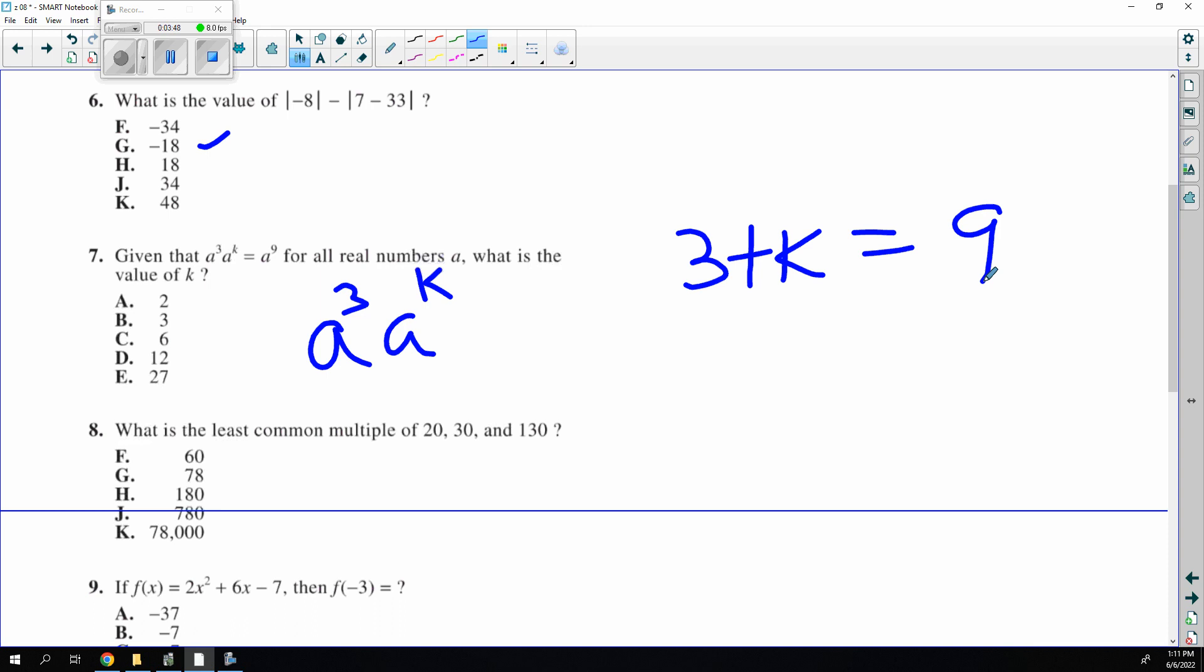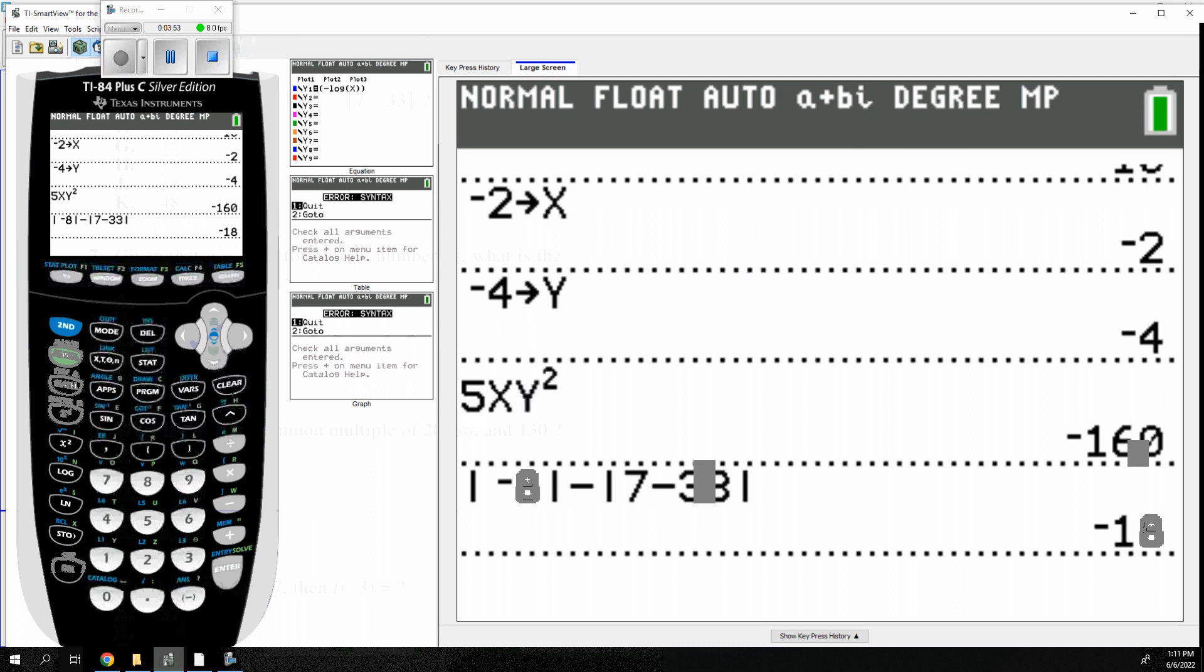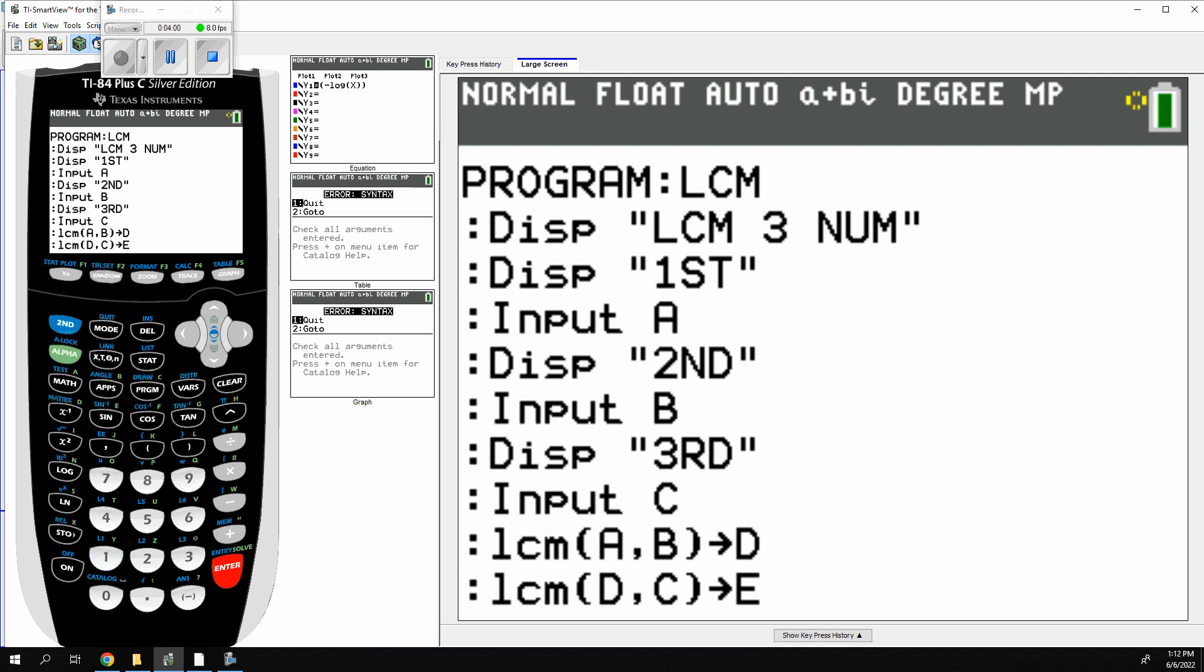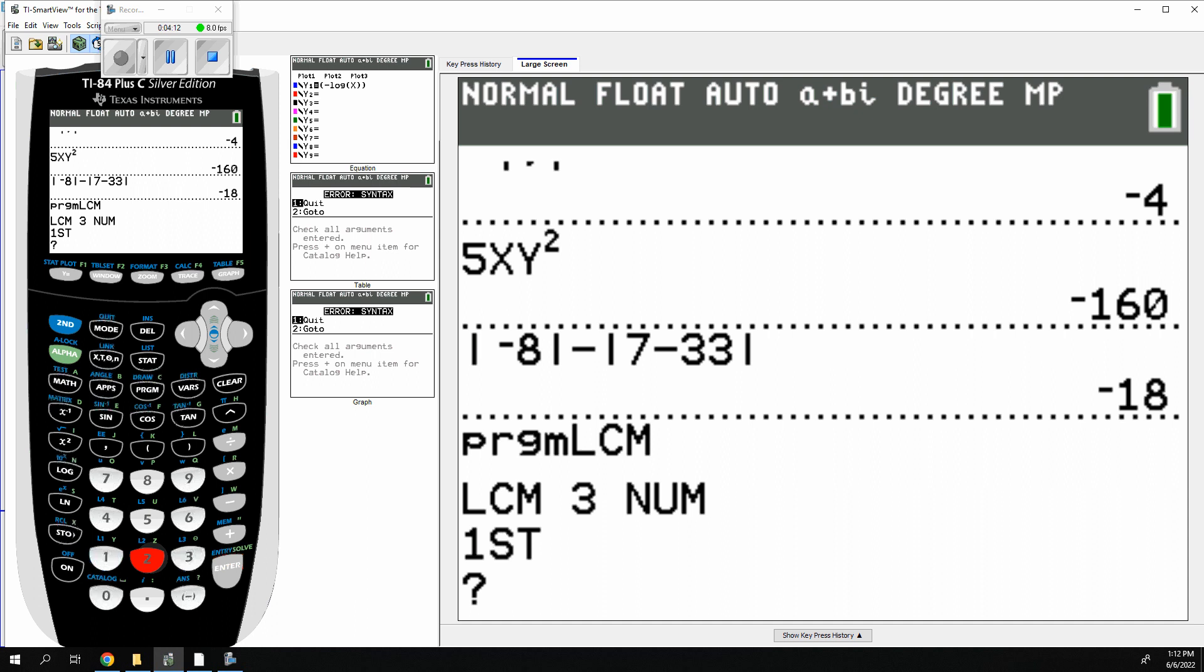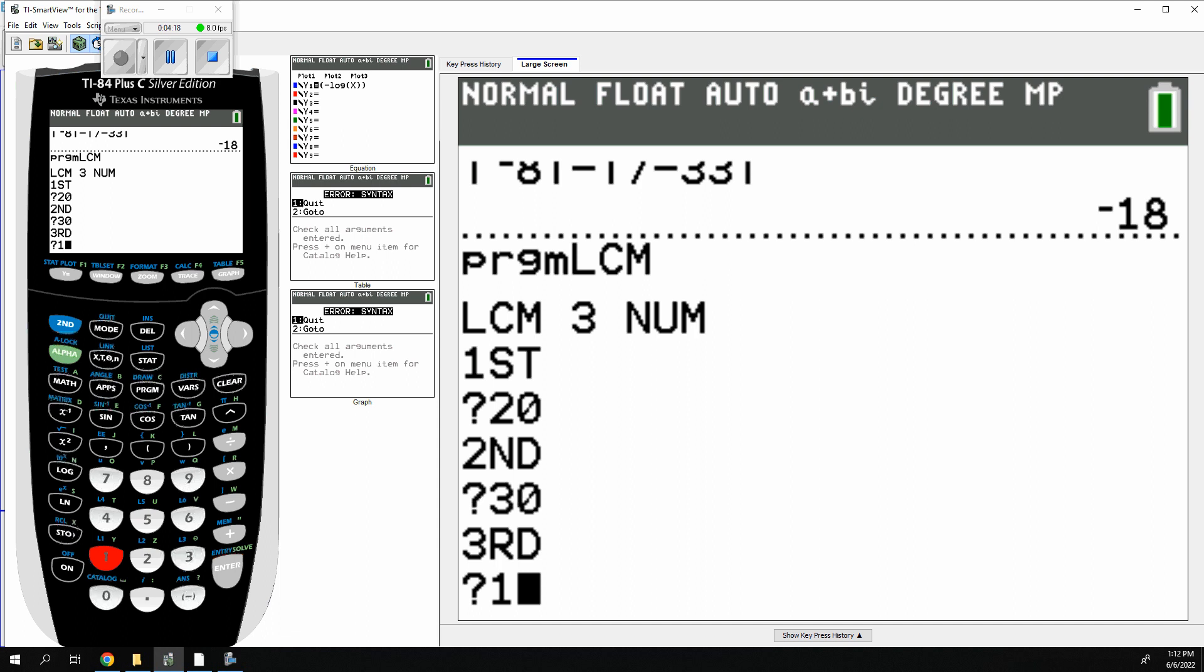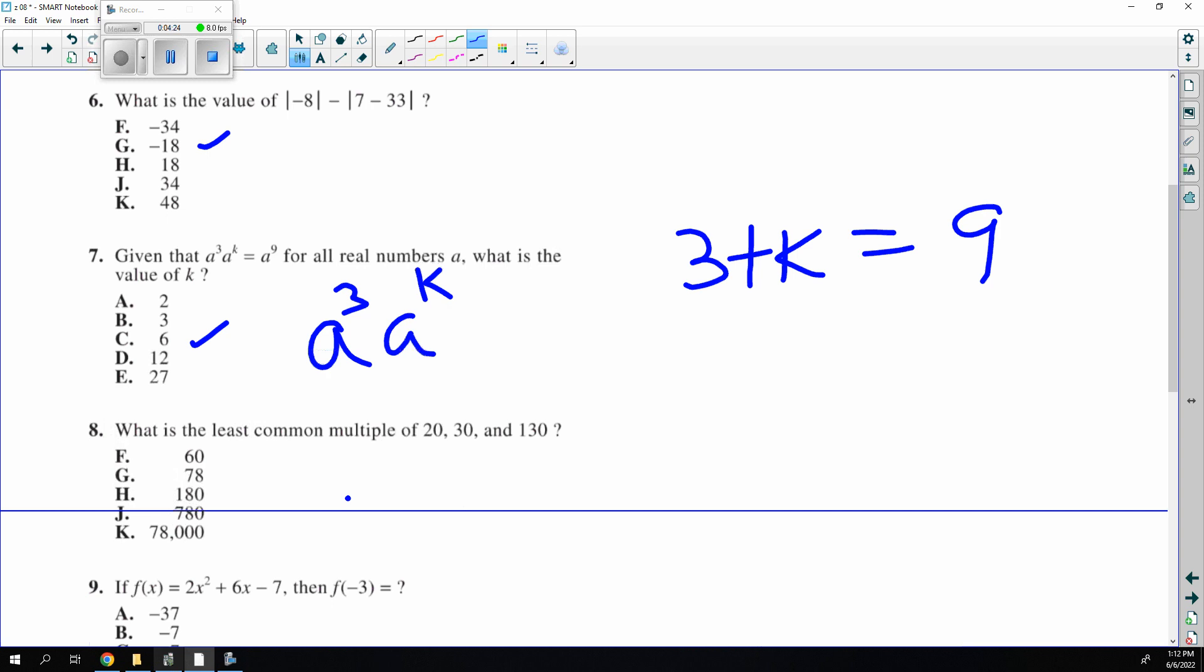20, 30, and 130. L, C, M. One of my favorite programs. And there's a great use of it. Why am I in the program when I want to be executing the program? Alpha L to get me there. And it was 20, 30, and 130. I love this. It does it for you automatically to get 780 answer J.